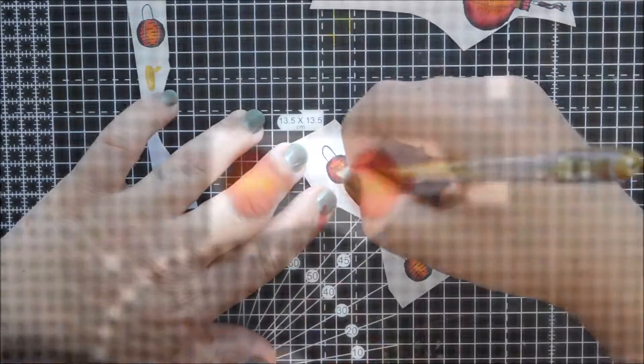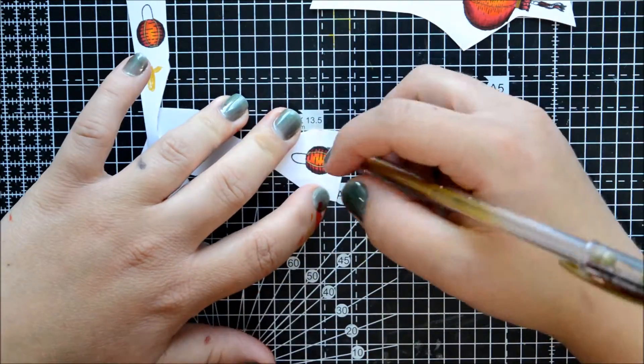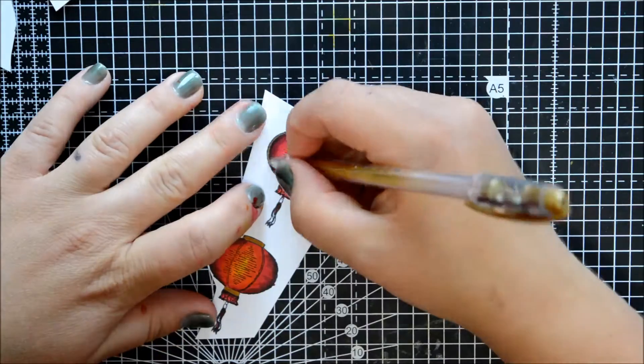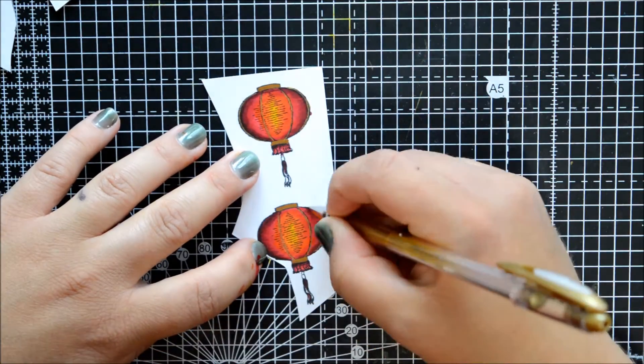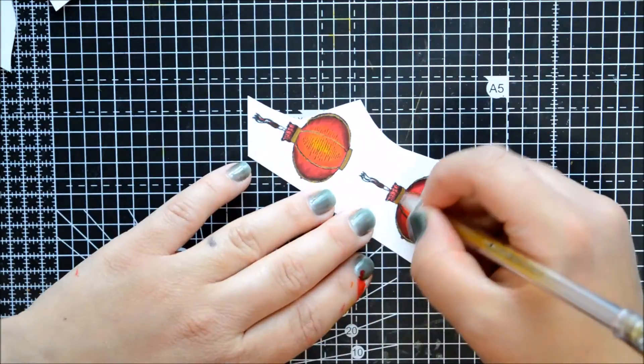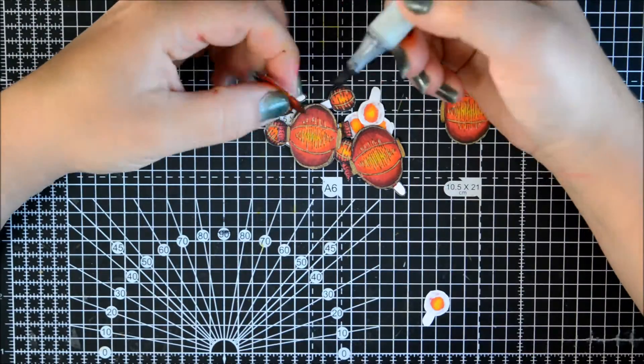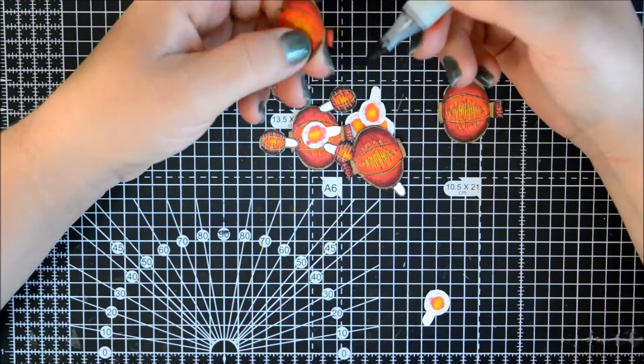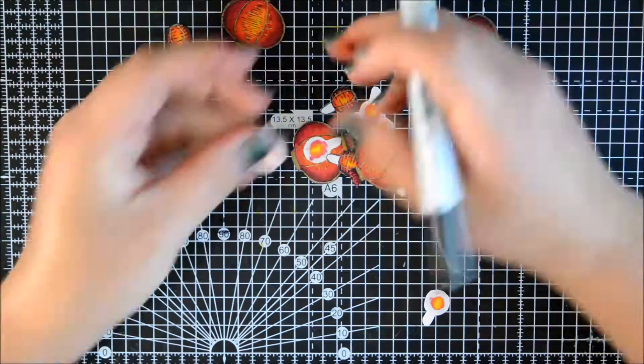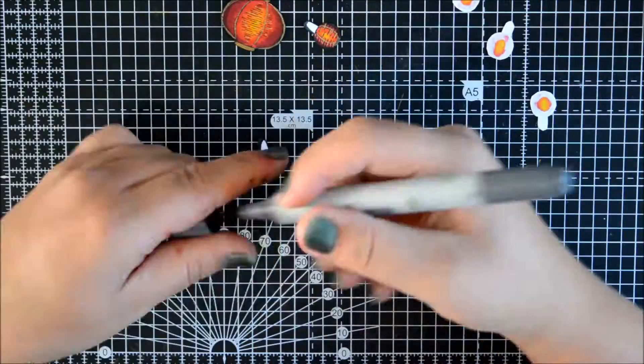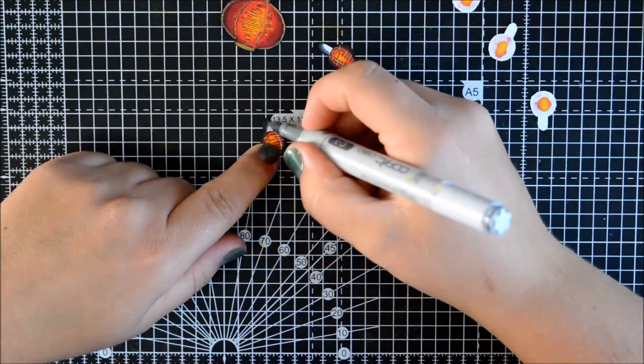Once I'm done with the coloring, I found some gold Letraset Pro markers I had from before my Copic days and used that to add some gold. Then I used my gold gel pen and added more gold onto it. The gel pen is a bit more gold and has a bit more glitter in it when you see it in real life. Then I used my black Copic marker to do the edges because I like when it looks really neat.